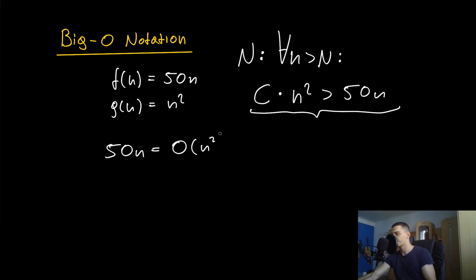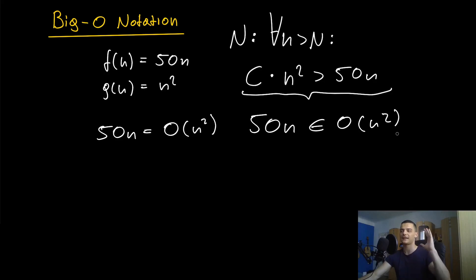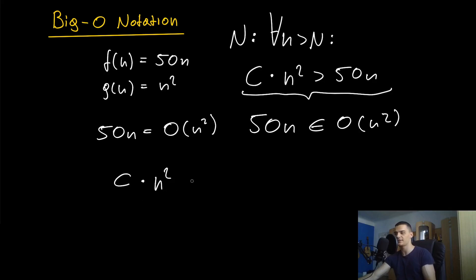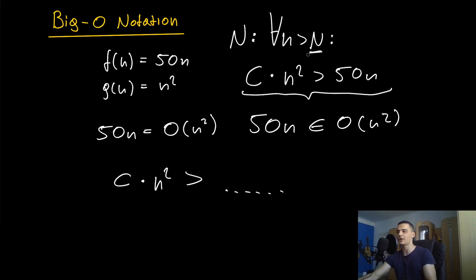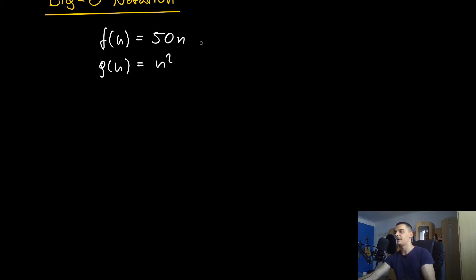The equals sign here — don't be confused by it. Mathematically accurate, you would say 50n is an element of O(n²), because O(n²) is essentially a set containing every function that is limited by n². 'Limited by n²' means I can choose a constant c, multiply it with n², and that will always be larger than some function on the right, for infinitely many n starting at a certain index. So it's pretty clear that 50n is in Big O of n².